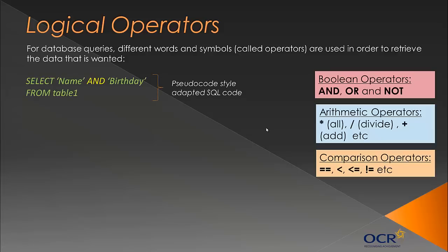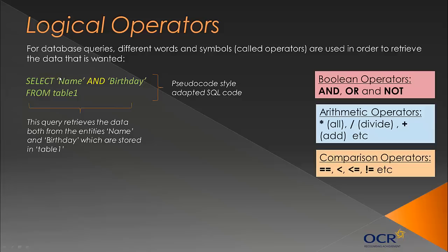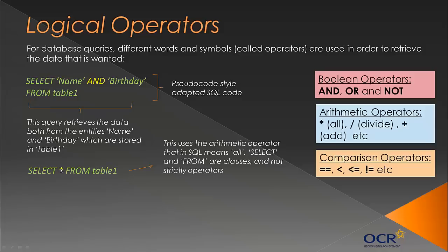I've adapted some SQL code - that stands for Standard Query Language, a programming language for databases - into pseudo code style. In the first example, we've got code that uses the AND operator. This retrieves data from both the entity's name and birthday from table 1 - because it's AND, it's both. In the second example, using an arithmetic operator, we use an asterisk which in SQL means ALL - it selects everything from table 1.